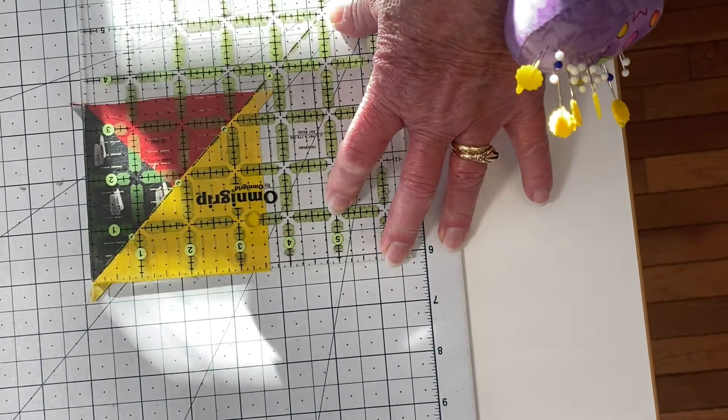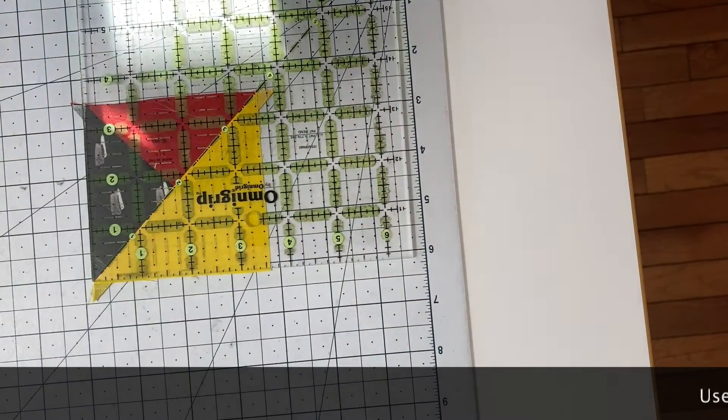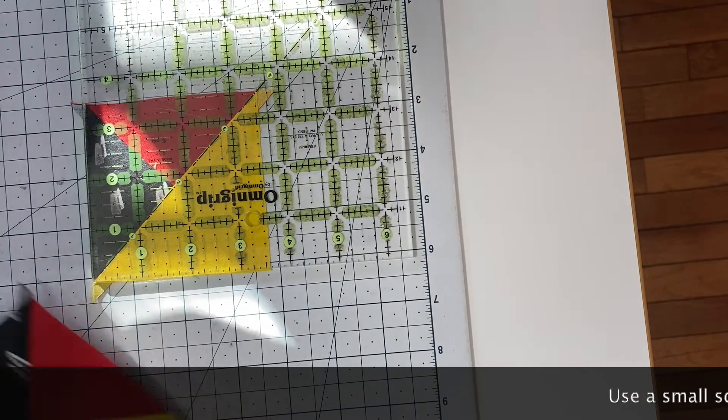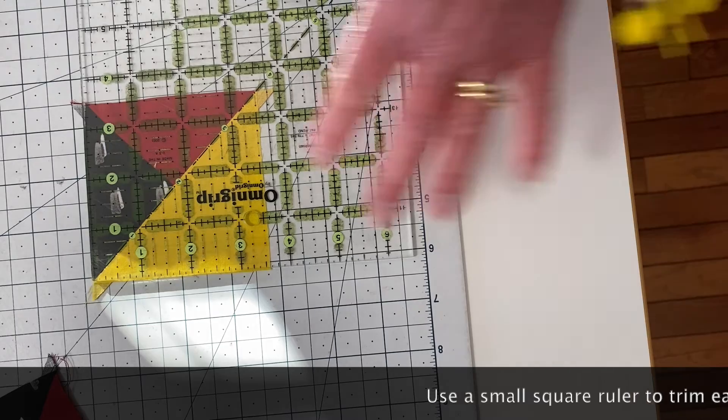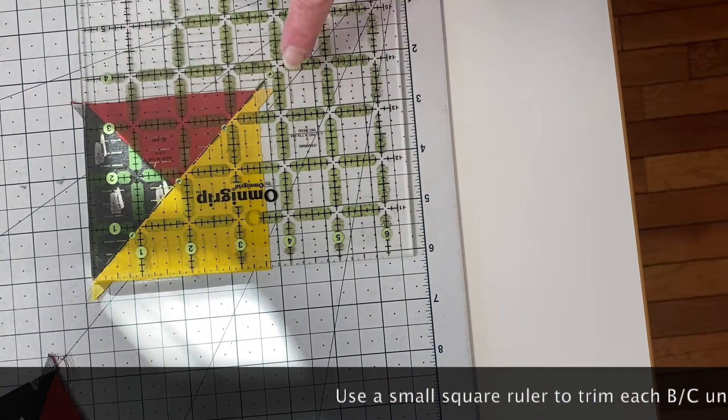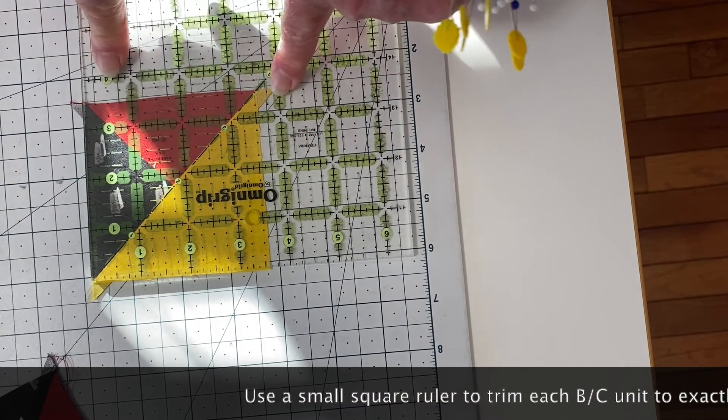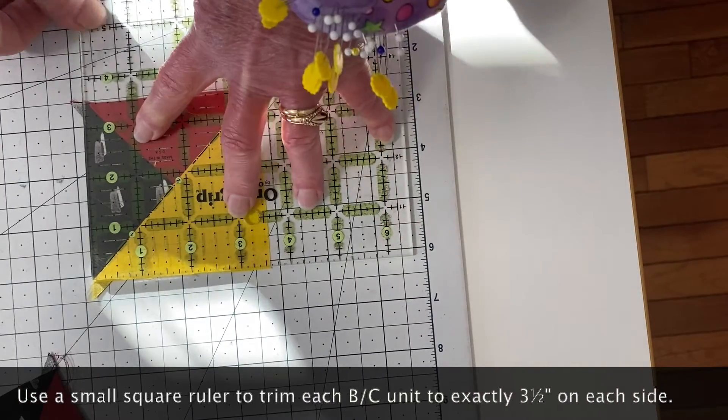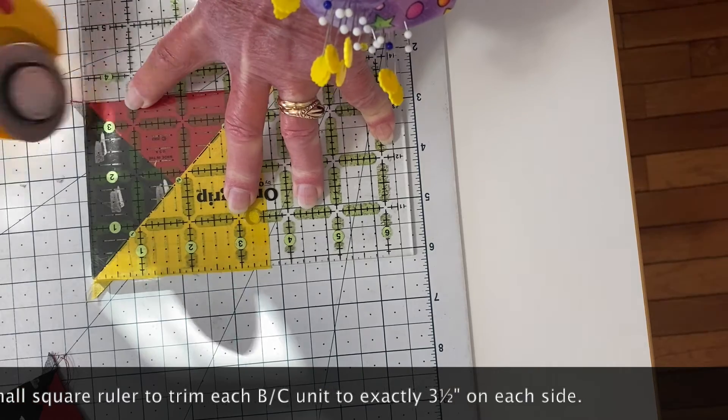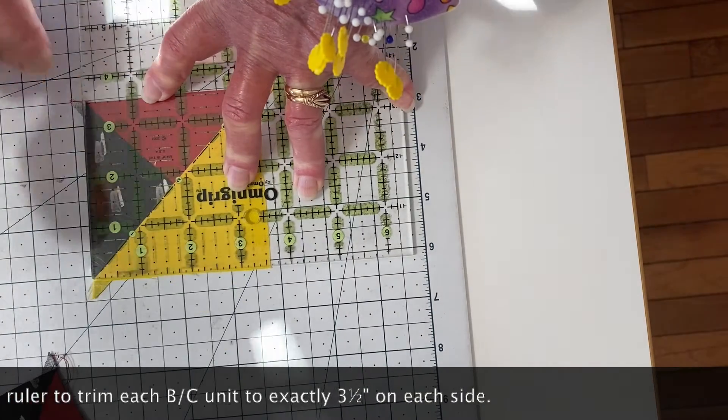Okay, we have our squares all sewn together. And now, here they are. And now I'm trimming them. There isn't a whole lot to trim. As you can see, I've laid my small square ruler on top with a diagonal line across the seam. And I'm looking at the three and a half marks.